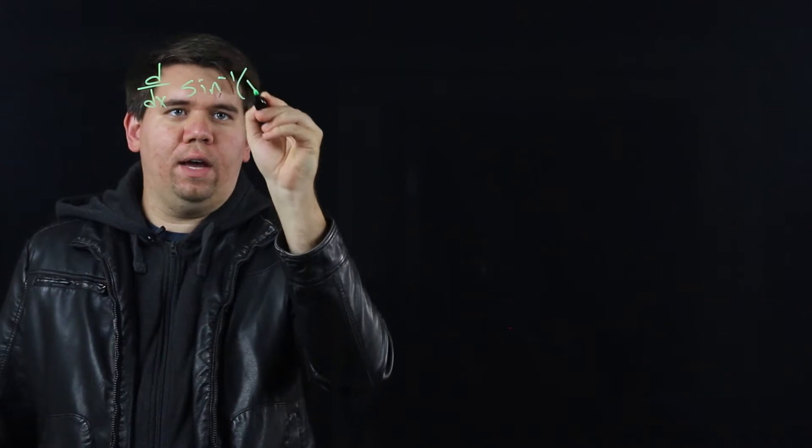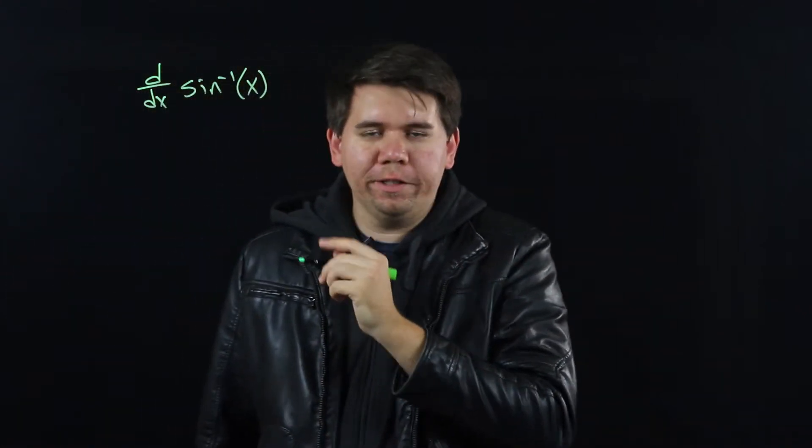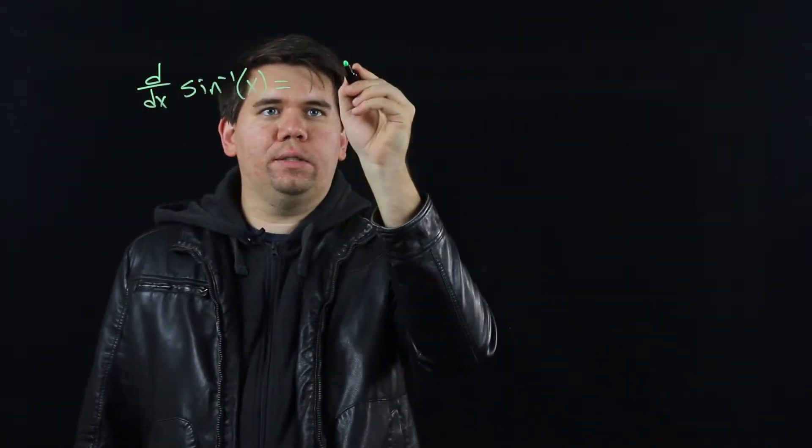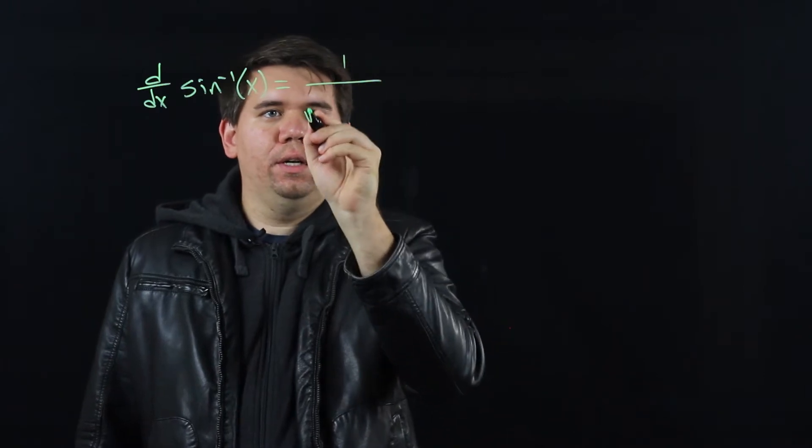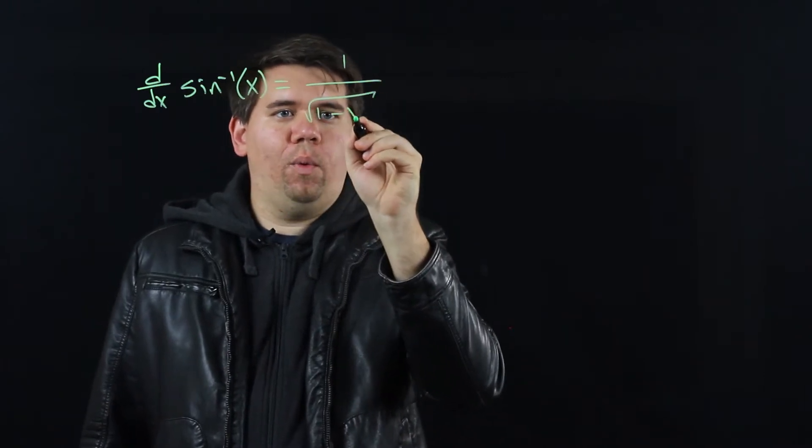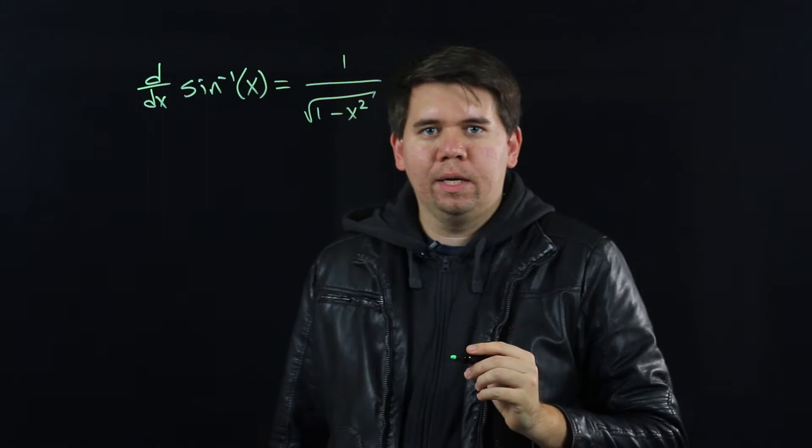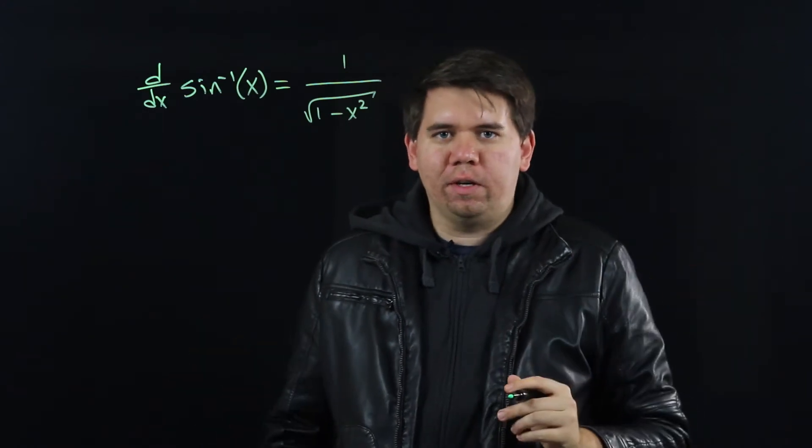We saw that the derivative of sine inverse of x, also called arc sine of x, is just 1 over the square root of 1 minus x squared.